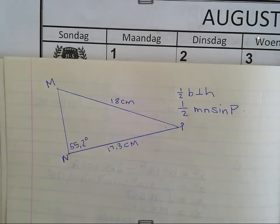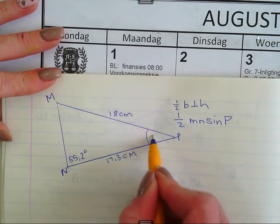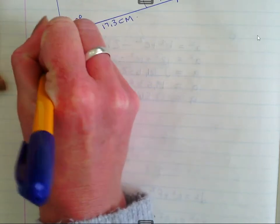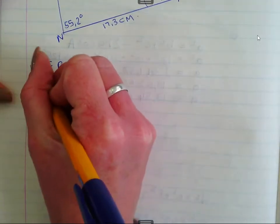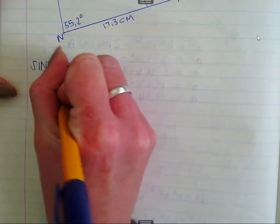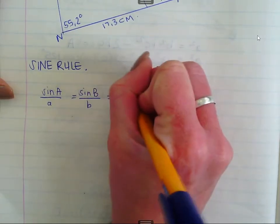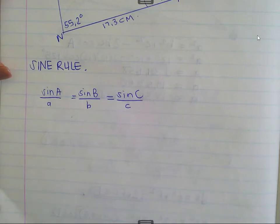But now the angle is not included, so we're going to learn the sine and the cosine rule, which enables us to calculate any of the unknown sides or angles of any triangle - it doesn't have to be a right-angle triangle. In order to calculate the missing angle, and once you have that angle you can calculate the area. That brings us to the first one we are learning about today: the sine rule. I'm first going to show you the application, and then maybe tomorrow I'll show you the proof of this theorem.